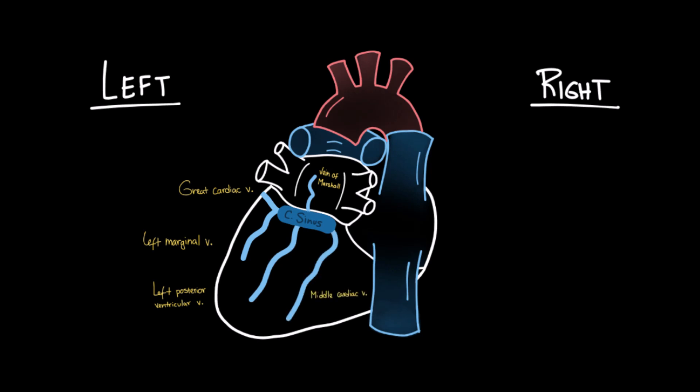Then we have the middle cardiac vein, which accompanies the posterior descending artery and drains into the coronary sinus, drains the posterior interventricular region. And on the right side of the heart, we have the small cardiac vein that runs along the right coronary artery and drains parts of the right atrium and right ventricle.